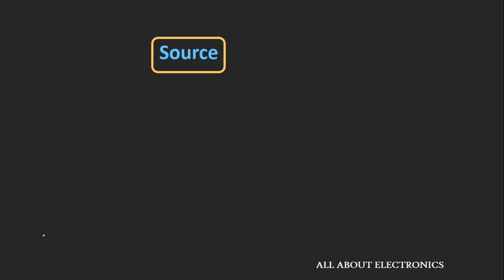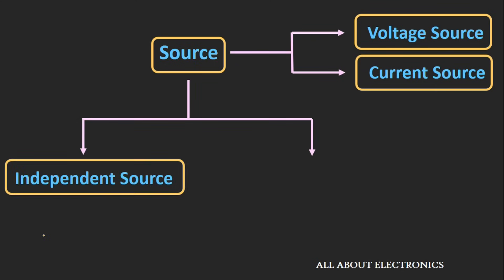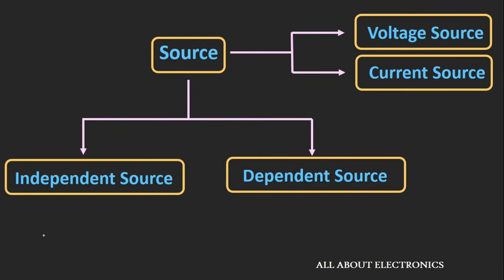As we already know, there are two kinds of sources: the voltage source and the current source. These sources can be classified into two categories — the first one is the independent source and the second is the dependent source.